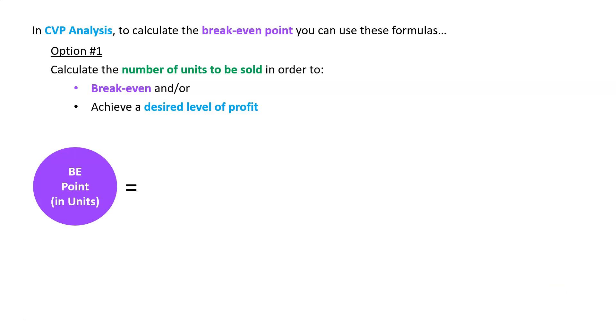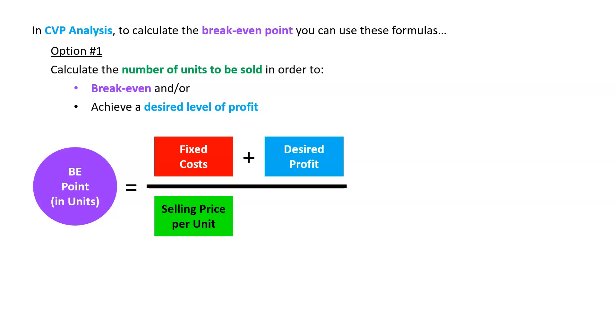That formula will be the break-even point in units, and we're going to say that is our fixed costs plus our desired profit, divided by our selling price less variable costs.